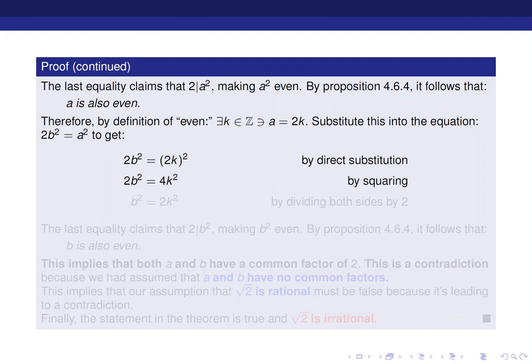Again, using the rules of exponents, we can FOIL or distribute or square, whatever you want to call it, to get 2b squared equals to 4k squared.